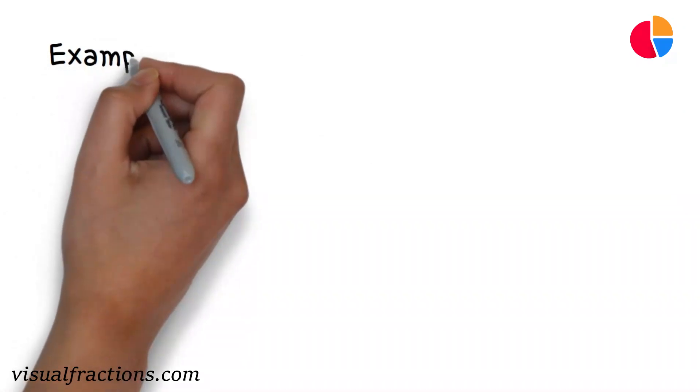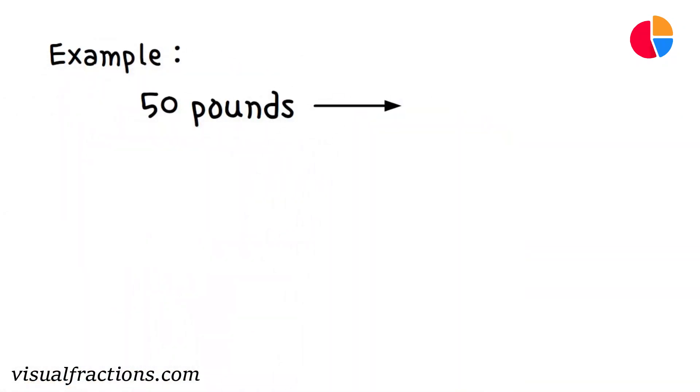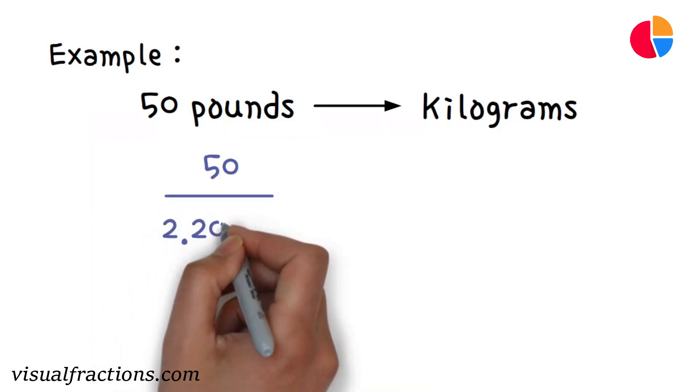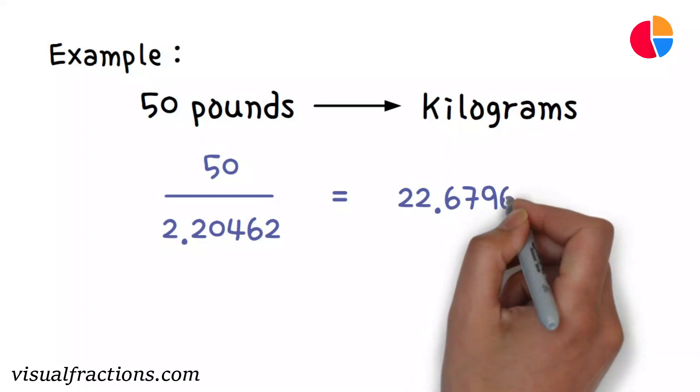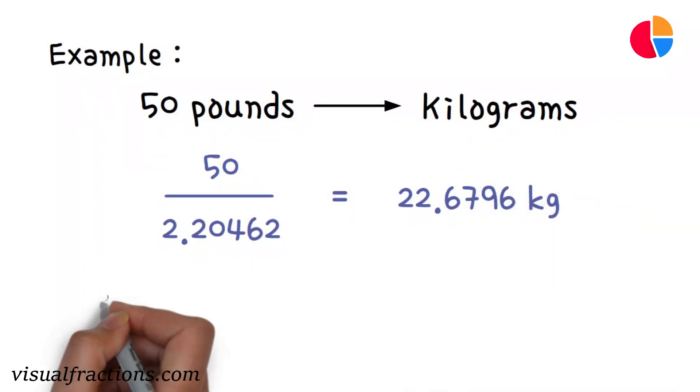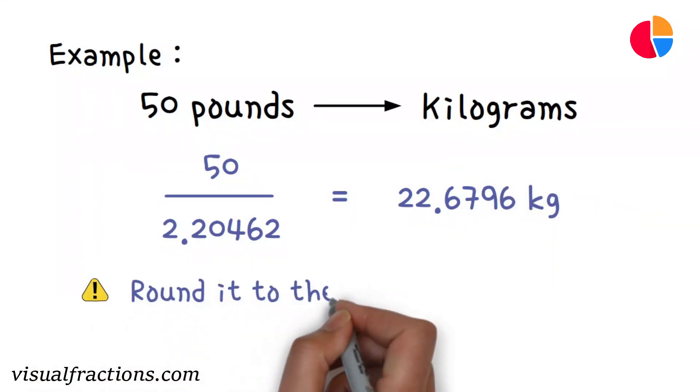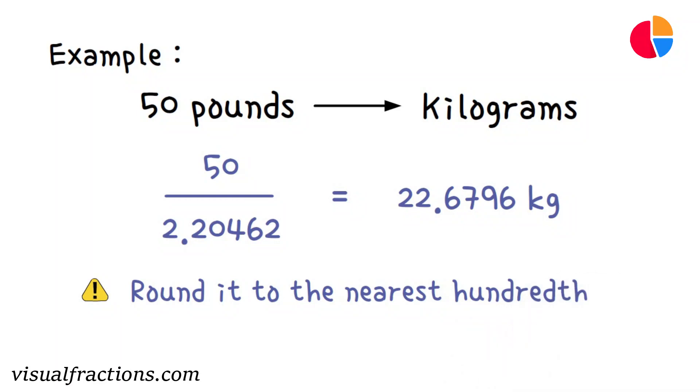Let's walk through an example of how to convert 50 pounds to kilograms. We start by dividing 50 by 2.20462. This gives us 22.6796 kilograms. But wait, we should round this number to the nearest hundredth, so our final answer is 22.68 kilograms.